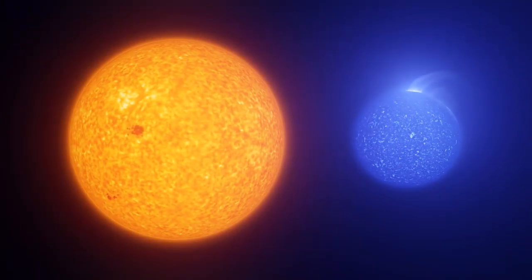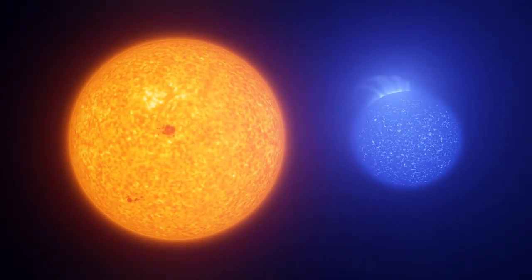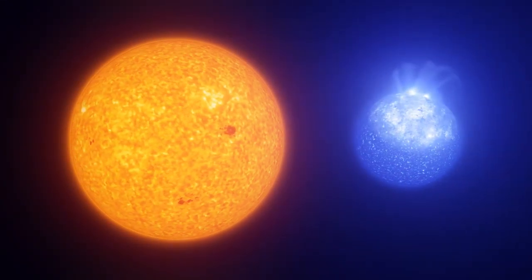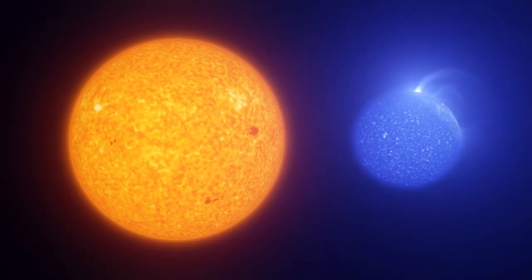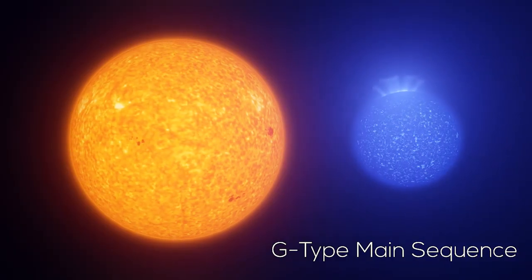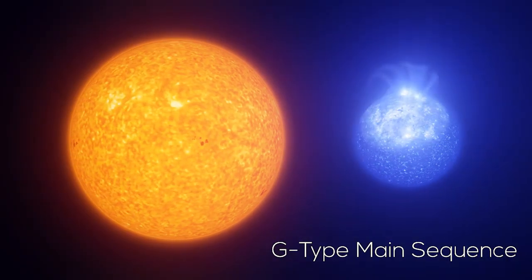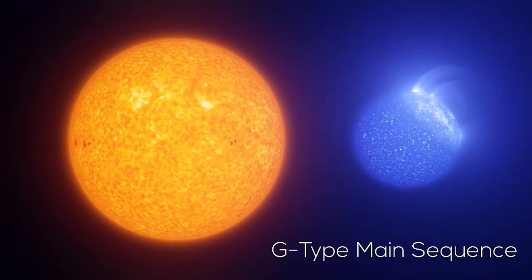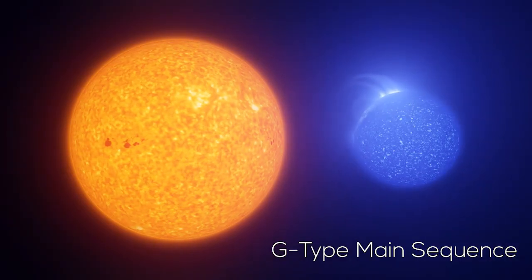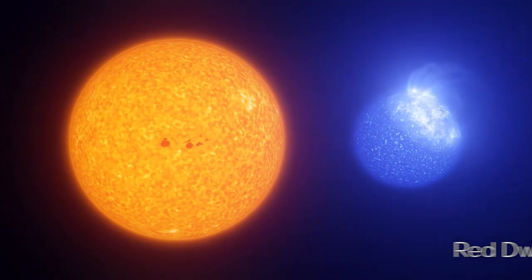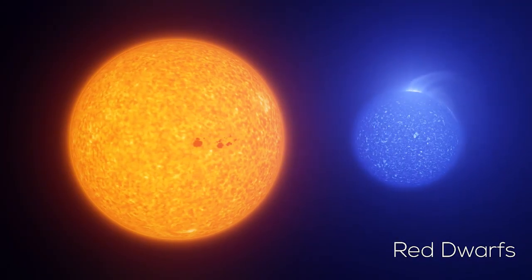Let's just cut to the point here. The sun is a yellow dwarf star. Yellow dwarf stars are also called G-type main sequence stars. These stars are a little different from the most commonly found stars in the galaxy, such as the red dwarfs.